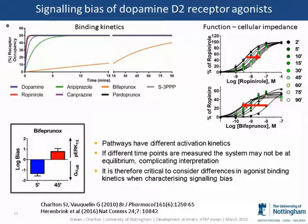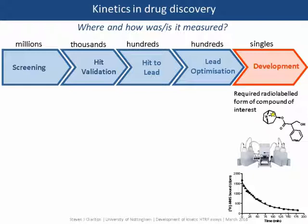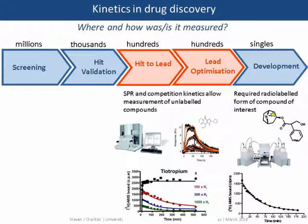So if kinetics are very important, how do we measure them? Looking at a standard drug discovery scheme from screening through hit validation, lead optimization, and development — kinetics have traditionally only been measured using radiolabelled material, which tends to be available only during late-stage drug discovery when you have one or two selected compounds. There, kinetics can be investigated using standard filtration-type assays or SPA assays. Although you can characterize your clinical compound, it doesn't allow you to develop kinetics as part of the optimization process.